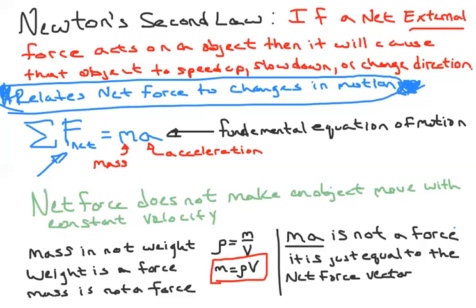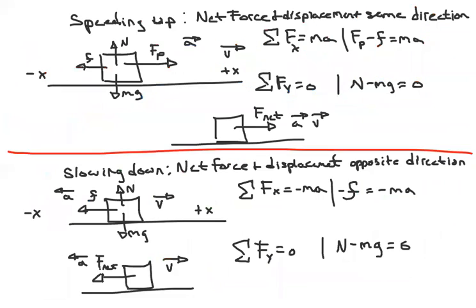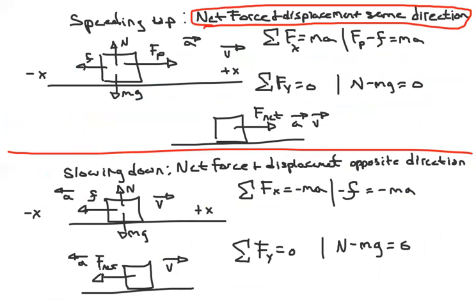If the object is speeding up, the net force is in the same direction as it's moving. If the object is slowing down, the net force is in the opposite direction. Net force and displacement are in the same direction when speeding up, and opposite directions when slowing down — that's very important to memorize.